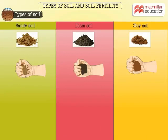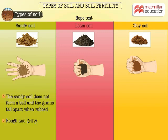Now let's perform what's called the rope test. We take a small ball of moist soil sample and squeeze it in our palm. We then rub the soil between our fingers. We observe that sandy soil does not form a ball and the grains fall apart when rubbed.